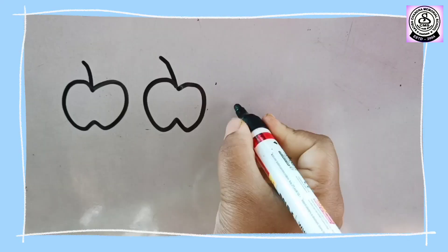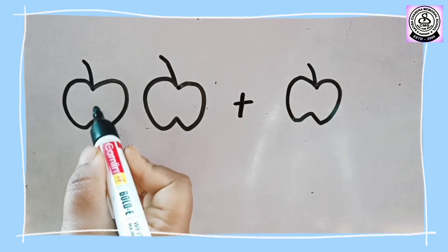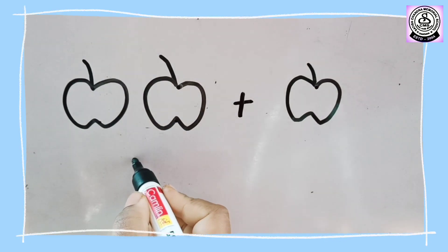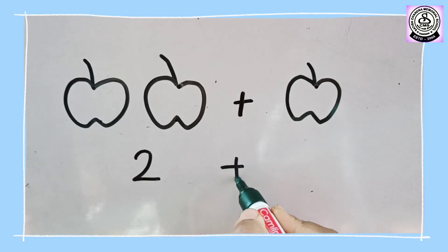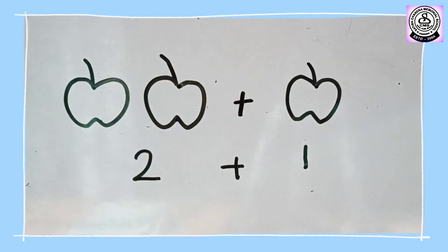I have drawn apples. Plus. So how many apples are here? 1, 2. So let's write here 2. Then what we will give? Plus sign. And how many apples here? 1 apple. So this is 2 plus 1.